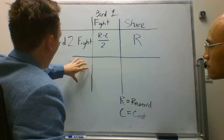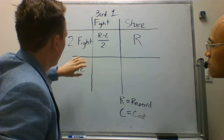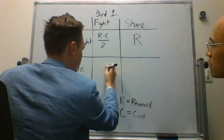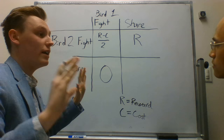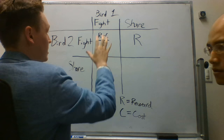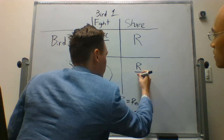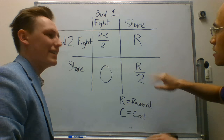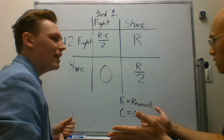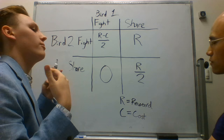Now we'll look at what happens if bird two is a sharer. In the first scenario, bird two who shares encounters bird one who fights. In this case, bird two gets nothing — he sees the fighter, doesn't want to incur a cost, and leaves. In scenario two, bird two who shares encounters another individual who shares. In this case, they each split the reward equally — there's no cost because they didn't fight. They just chose to share and split the meat in two, with no energy expended fighting.